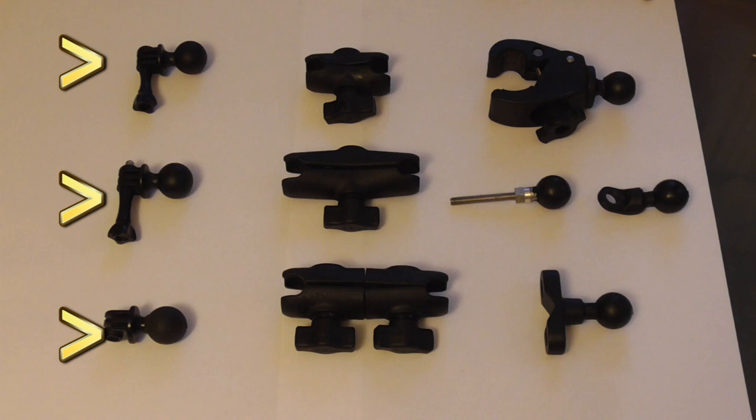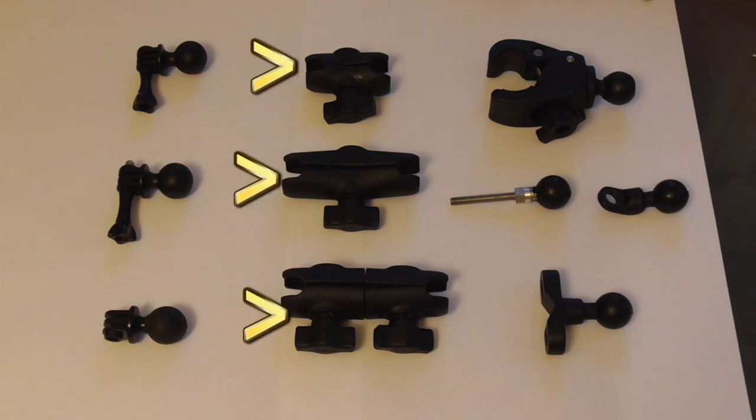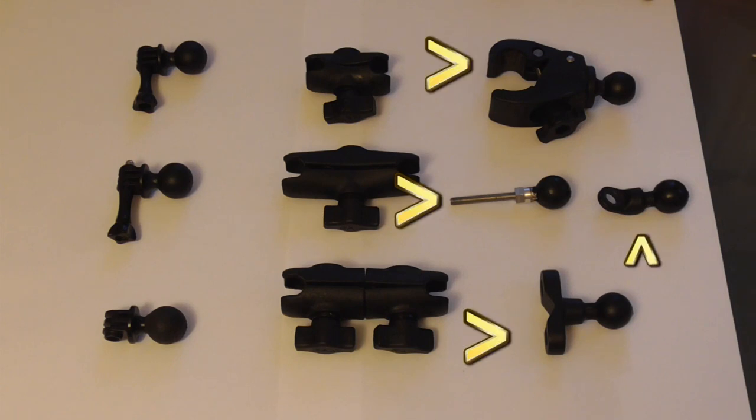Starting from the left we have three camera mounts, there's a reason why there's three shown on there. In the middle we have three different arms, a short, medium and an articulating arm. I'll go into this in a bit. And on the right starting at the top we have a clamp ball mount, an adder ball, a handlebar ball and a sat nav ball.